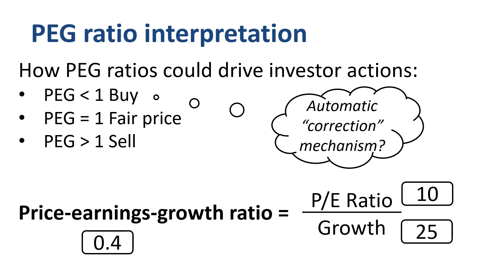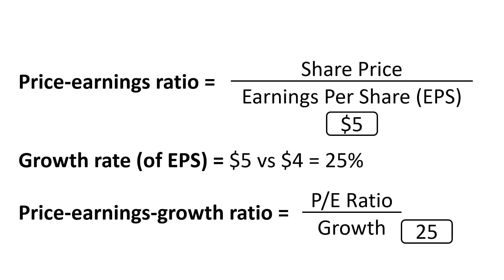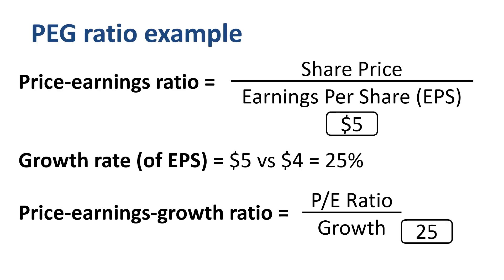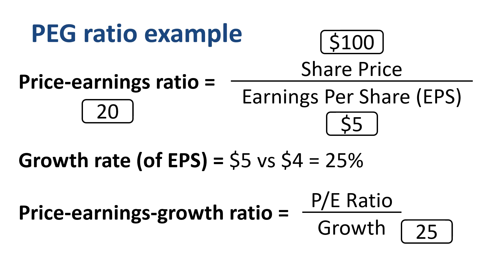Let me show you how that works. Let's say that for the company we are looking at, the share price doubles. Instead of the $50 it was trading at before, the share price is now $100. As a result, the PE ratio doubles to 20. If the growth rate stays the same, the PEG ratio has just doubled to 0.8.